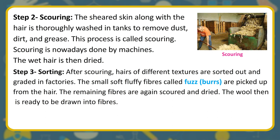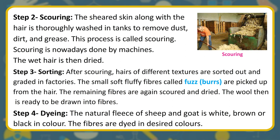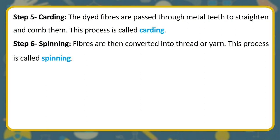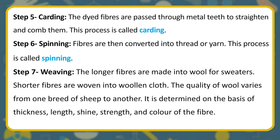The wool is then ready to be drawn into fibers. Step 4 — Dyeing: The natural fleece of sheep and goat is white, brown, or black in color; the fibers are dyed in desired colors. Step 5 — Carding: The dyed fibers are passed through metal teeth to straighten and comb them. Step 6 — Spinning: Fibers are then converted into thread or yarn. Step 7 — Weaving: The longer fibers are made into wool for sweaters, while shorter fibers are woven into woolen cloth. The quality of wool varies from one breed to another and is determined by thickness, length, shine, strength, and color of the fiber.